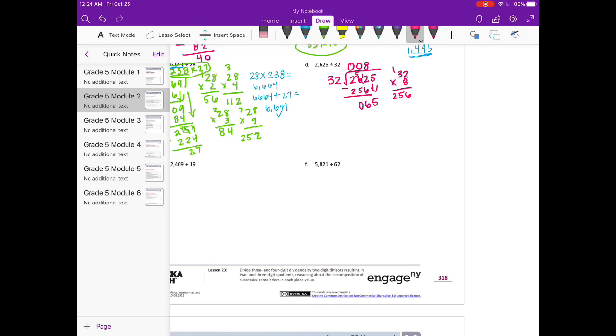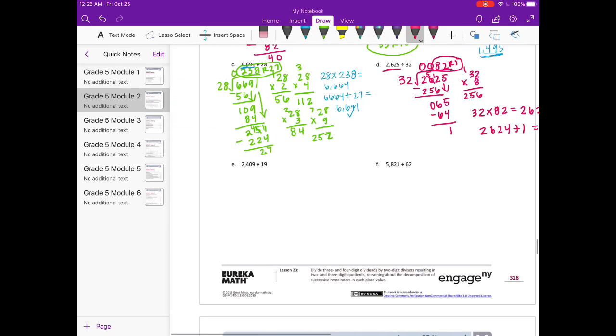32. How many times can 32 go into 65? Well, let's see, 32 times 2 would be 64. So it could go in twice. So we have 82 remainder 1. So then our check would be 32 times 82, which is equal to 2624. And 2624 plus 1 is 2625. And that does match what we started with, our dividend.